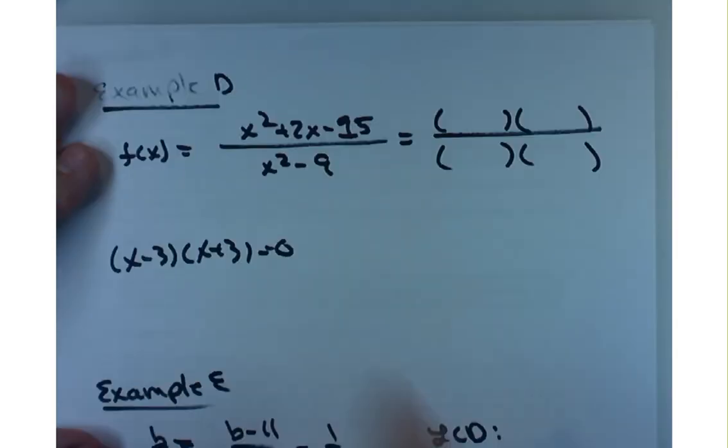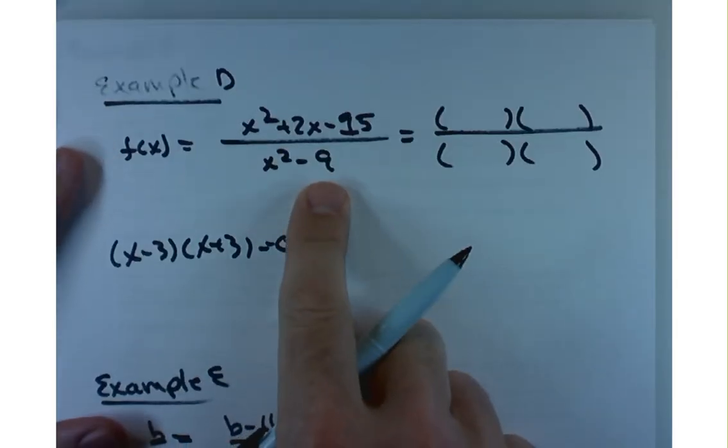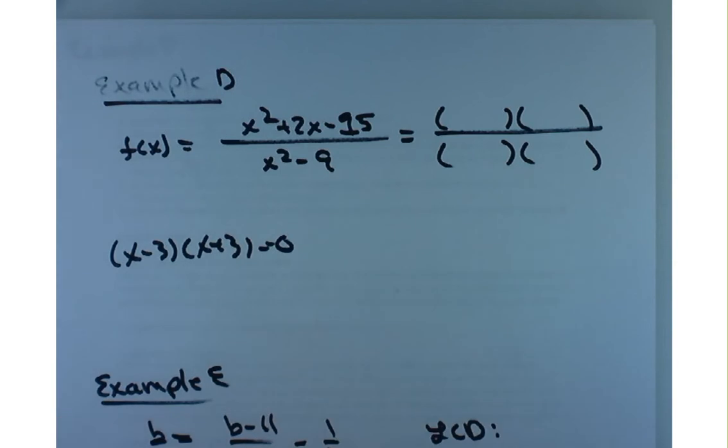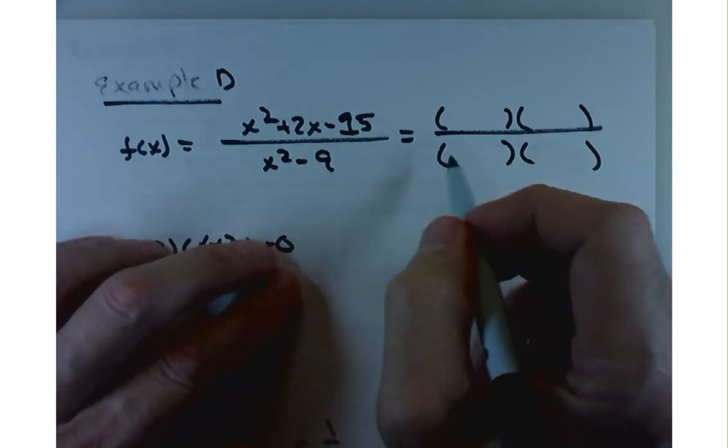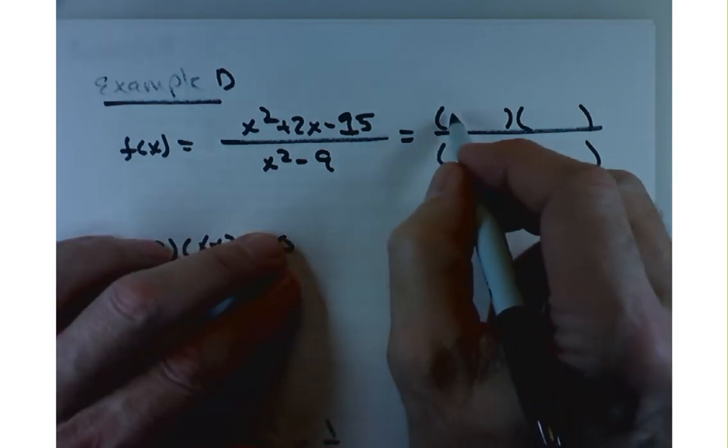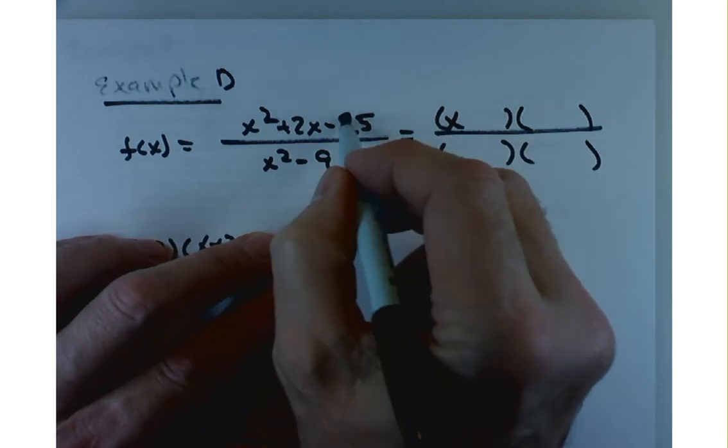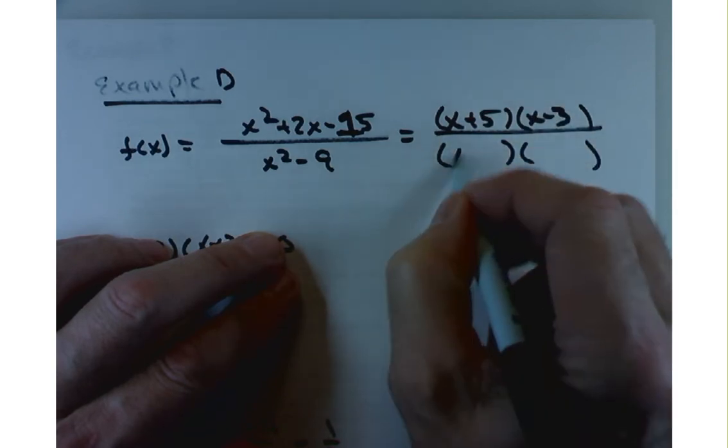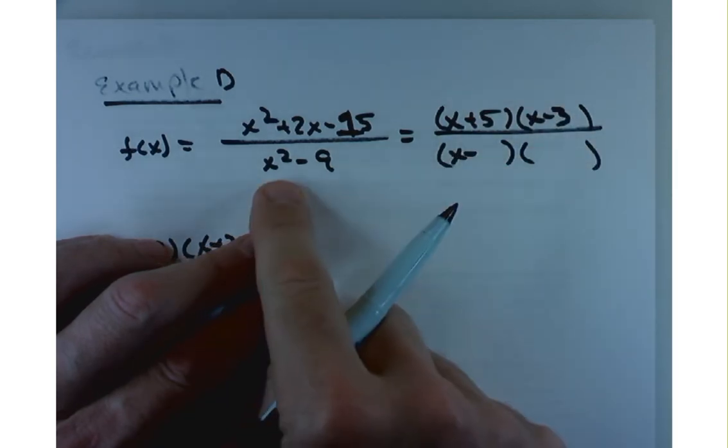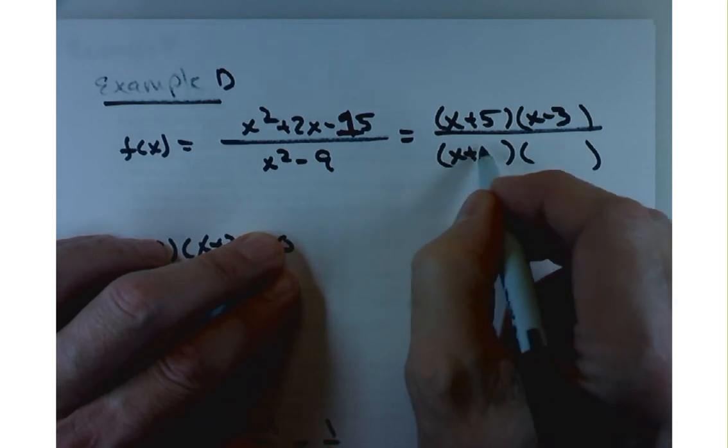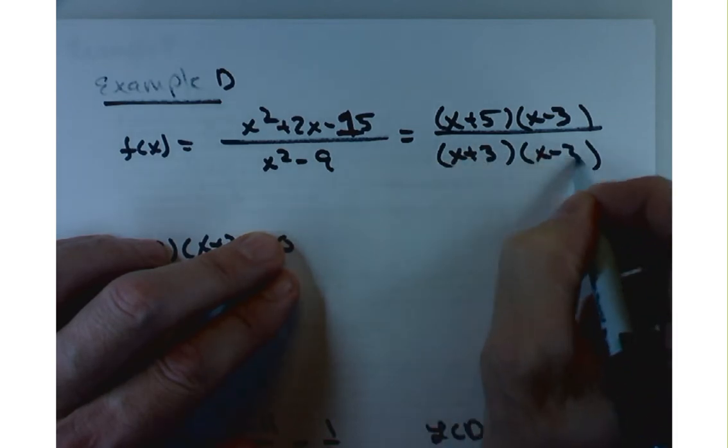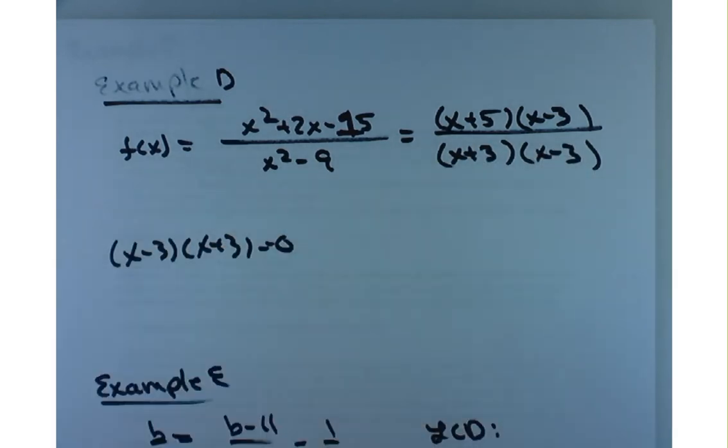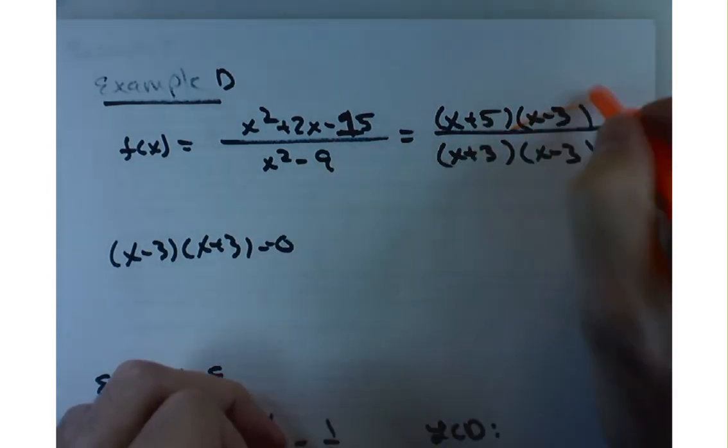Let's keep going. A couple more. Kind of a quick one. Example D, they ask you to simplify this and talk about the domain. So, in simplifying this, the first thing I'll do is I'll factor that, and that's a 1 here. So, x squared plus 2x minus 15, x plus 5, x minus 3. How about the denominator? That's the difference of squares. x plus 3, x minus 3. So, the simplification is pretty straightforward. You can get rid of both of those.